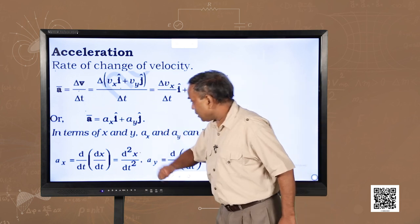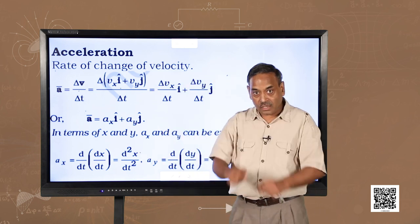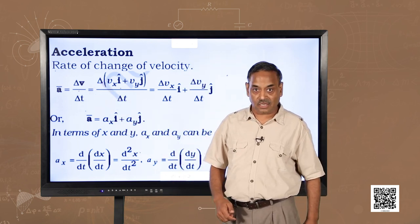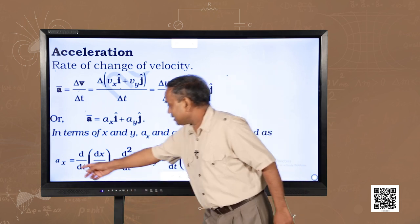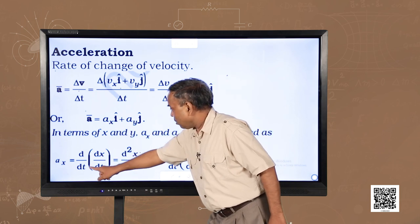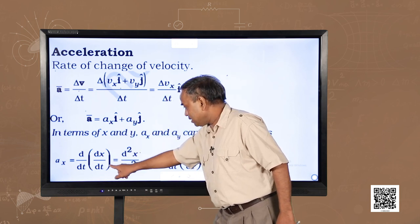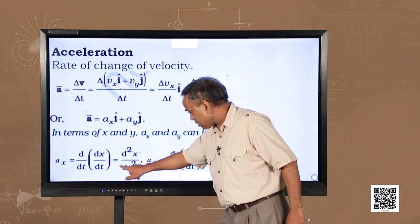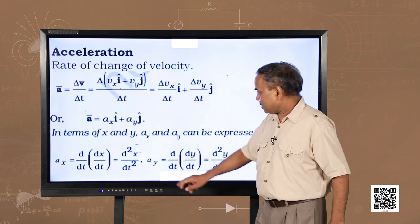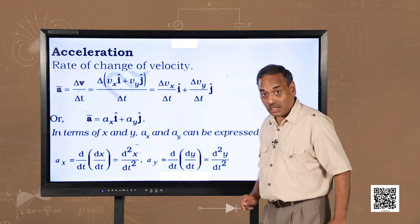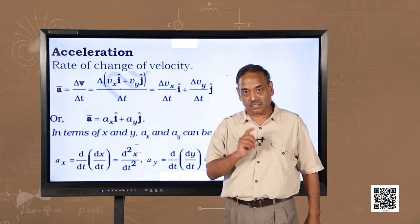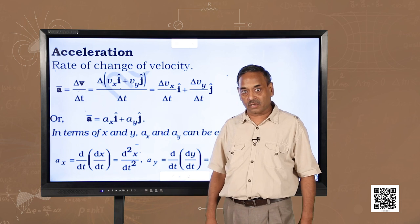Now, as delta t decreases towards zero, these quantities become differential quantities. We can write d v_x by d t, so a_x is nothing but d/dt of velocity, and since velocity is d x by d t, this gives the second-order differential equation d²x by dt². Similarly, a_y can be written as d²y by dt². This much calculus you must have covered in the last chapter.